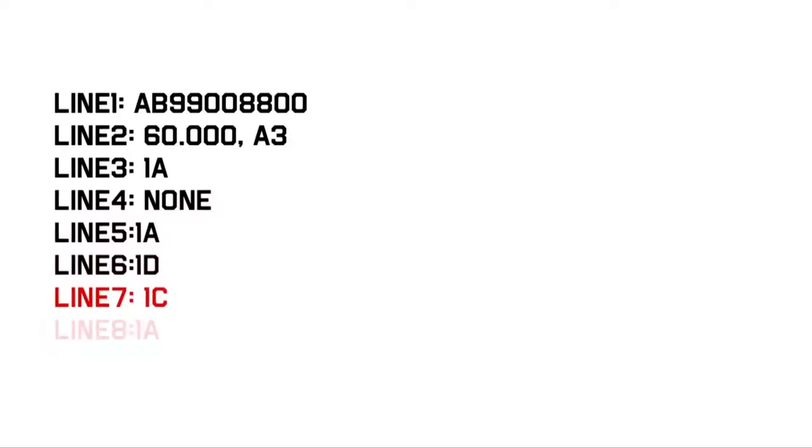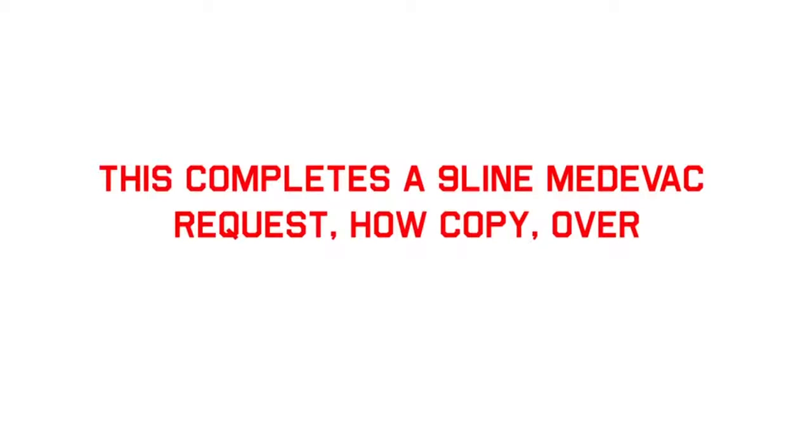Line 1: Alpha, Bravo, 9-er, 9-er, 0, 0, 8, 8, 0, 0. Break. Line 2: 6, 0, 0, 0. Alpha 3. Break. Line 3: 1, Alpha. Break. Line 4: None. Break. Line 5: 1, Alpha. Break. Line 6: 1, Delta. Break. Line 7: 1, Charlie. Break. Line 8: 1, Alpha. Break. Line 9: None. Break. This completes a 9-line medevac request. How copy. Over.